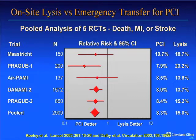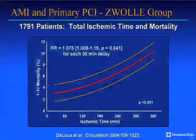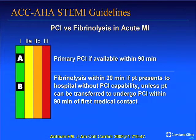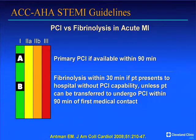Time to therapy is critical. It's been estimated that for every 30-minute delay, there is about a 7% relative increase in the risk of mortality. The recommendations reflect this: if PCI is available within 90 minutes, it is recommended over fibrinolytic therapy. But if a patient presents to a hospital without PCI capability and cannot be transferred to undergo PCI within 90 minutes of first medical contact, they should receive rapid fibrinolytic therapy.